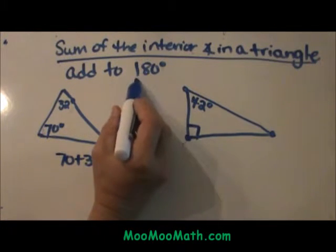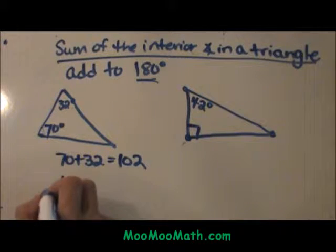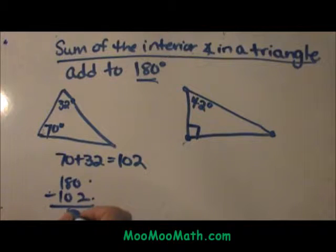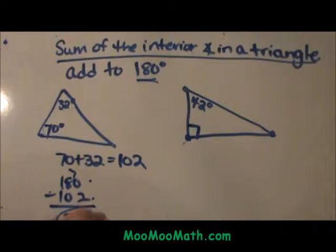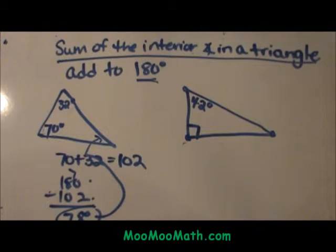We know the sum of the triangle is 180. What is left out of the 180 degrees? We take 180 minus 102, and that leaves us with 78 degrees. That means this third angle must be 78 degrees.